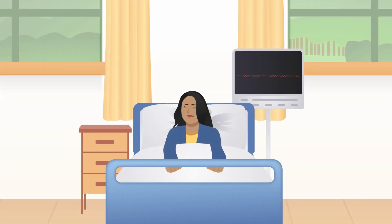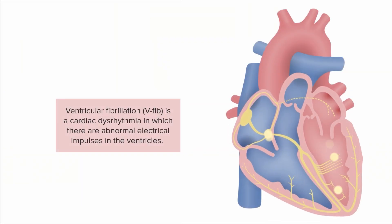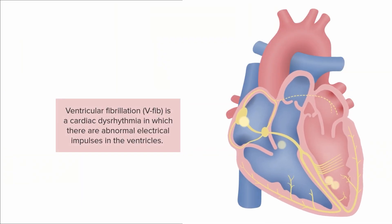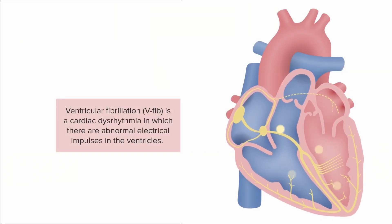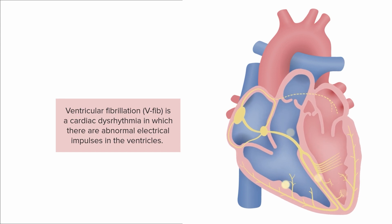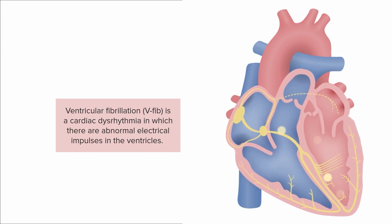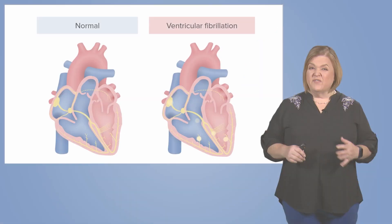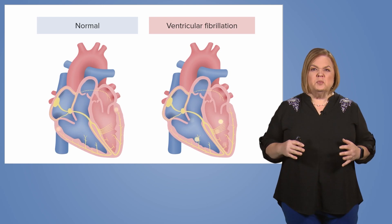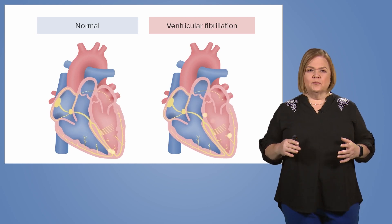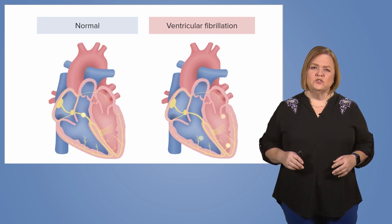Are you feeling intrigued? Do you want to know why this ECG looks like that? Good. Let's find out together. V-fib is a cardiac dysrhythmia where there are abnormal electrical impulses in the ventricle. Ventricular fibrillations are caused by multiple weak ectopic sites in the ventricles.